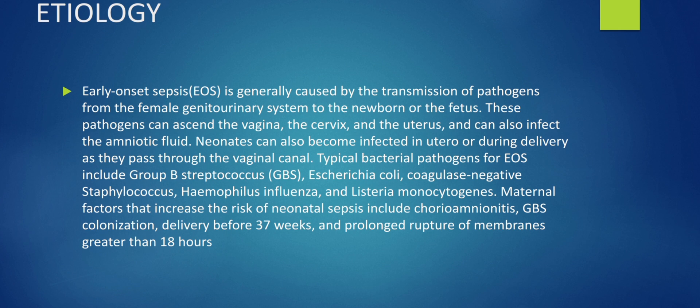Maternal risk factors for early onset neonatal sepsis include chorioamnionitis (infection of the amniotic fluid), GBS colonization by Group B Streptococcus — which in high-income countries is routinely screened for by swabbing the mother before birth — delivery before 37 weeks, and prolonged rupture of membranes greater than 18 hours.